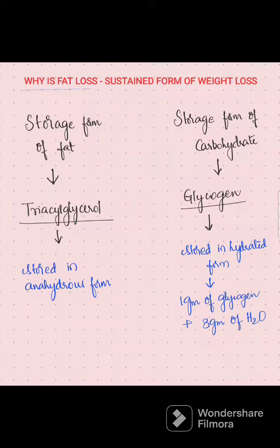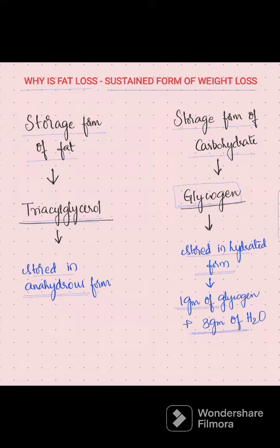Why is fat loss the sustained form of weight loss? Because the storage form of fat is triacylglycerol, or triglycerides, which is stored in anhydrous form, meaning it doesn't require water for its storage. Whereas the storage form of carbohydrate is glycogen, and this glycogen is stored in hydrated form, meaning 1 gram of glycogen requires 3 grams of water for its storage.